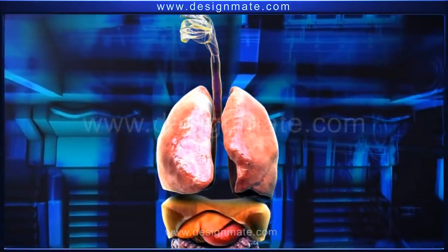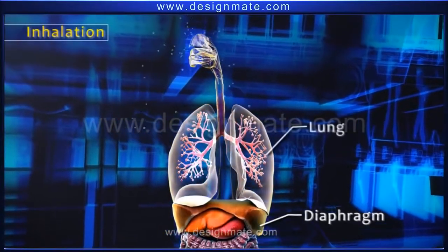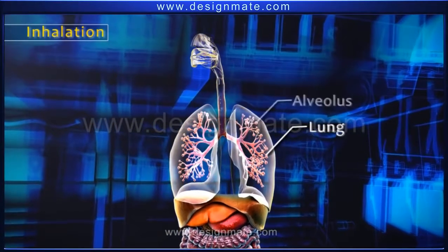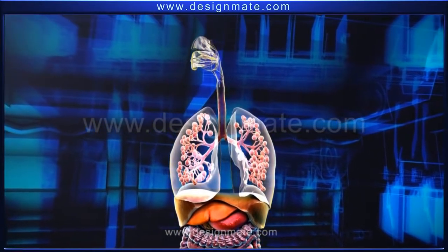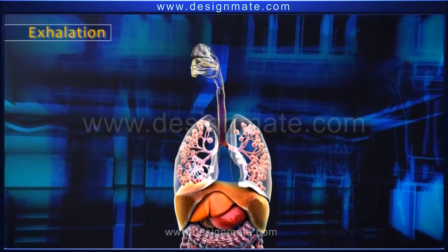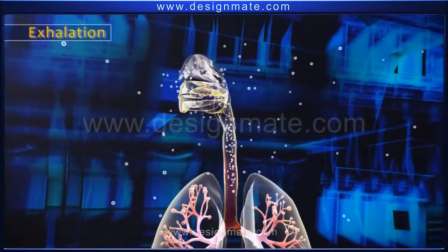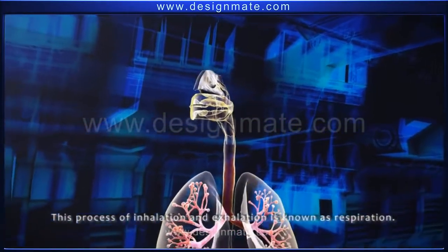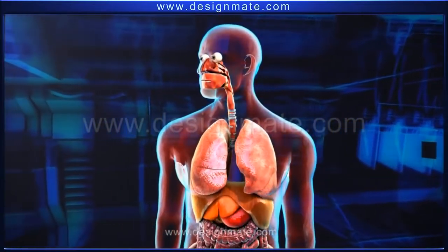The process of breathing in air rich in oxygen is called inhalation. After the contraction of the muscular diaphragm, the lungs expand and air rushes in, resulting in the inflation of the alveoli. During exhalation, the diaphragm moves up and the lungs contract, causing the alveoli to deflate and forcing air out. This exhaled air is rich in carbon dioxide.